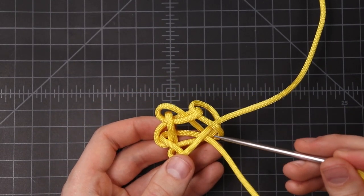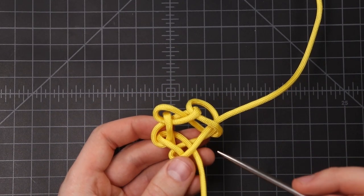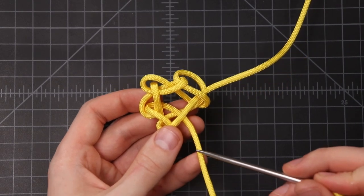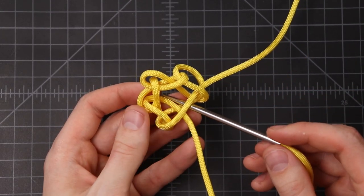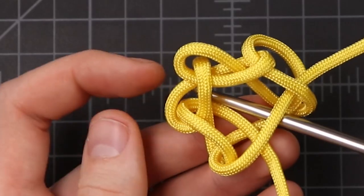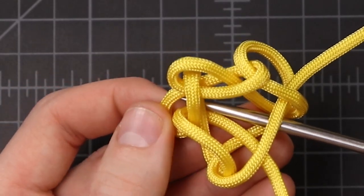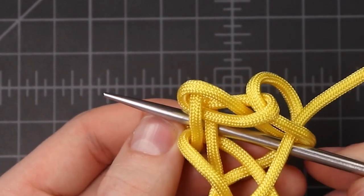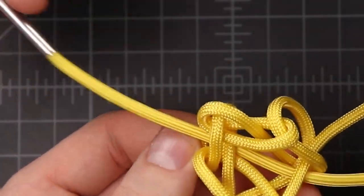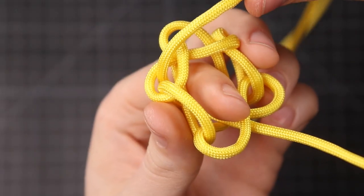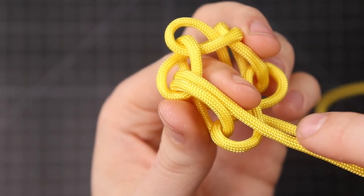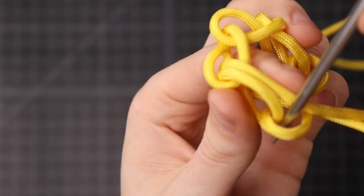So to start out, we're going to be going down through the knot, right alongside this short end, to the right side of it, or to the inside. You want to go all the way through, and through this loop over here. And then we'll bring our cord back over the top, still following that right side, and down through this loop.